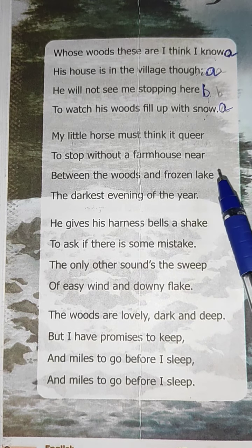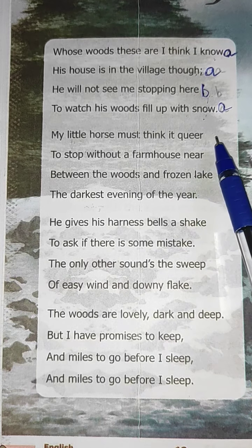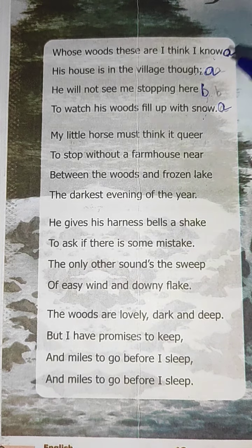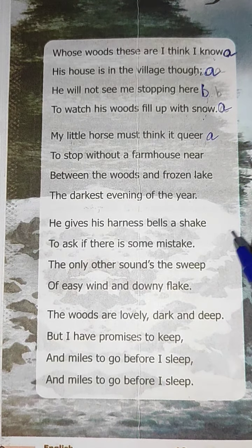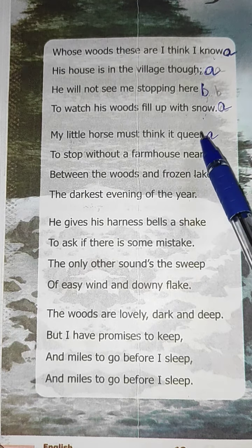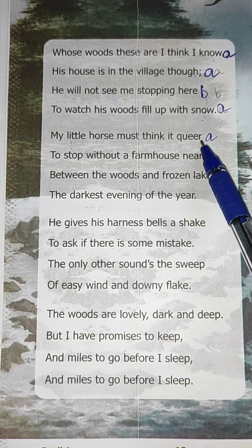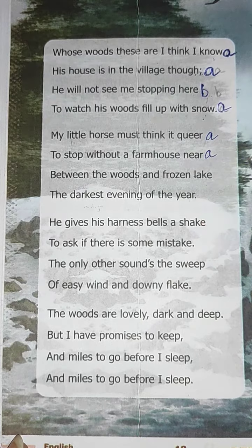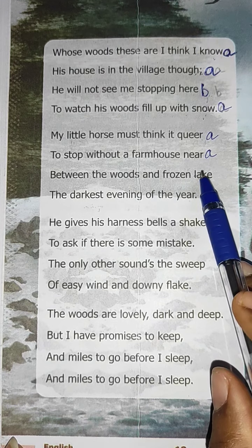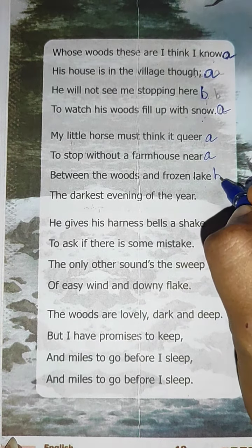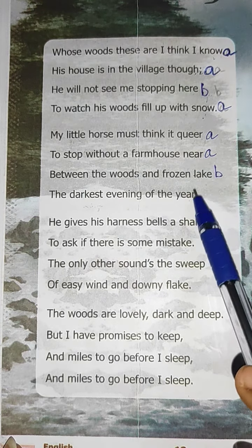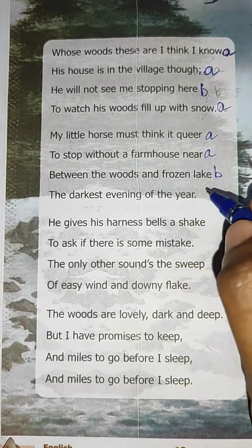Now let us check the second stanza. The words are: queer, near, lake, year. Queer and near both rhyme, so mark them as A. Lake doesn't rhyme with queer or near, so mark it as B. Year rhymes with queer and near, so mark it as A. The rhyme scheme of the second stanza is also A-A-B-A.